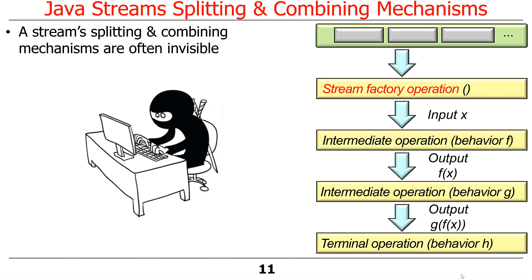We're going to begin our discussion about Java streams looking from the point of view of splitting and combining — that's what we'll focus on initially, and later we'll come back and talk about the apply phase. A stream's splitting and combining mechanisms are often invisible to most programs using streams, and this is true of both sequential streams and parallel streams — you can think of them as basically like a little ninja that you can't see.